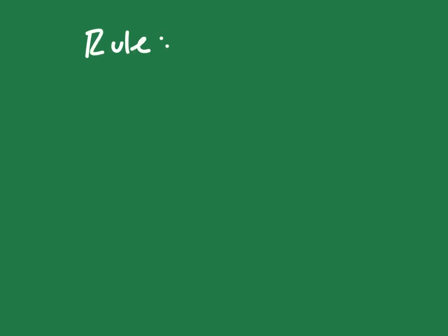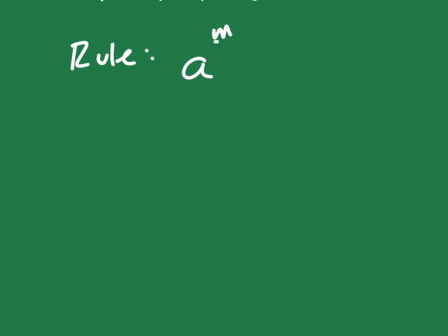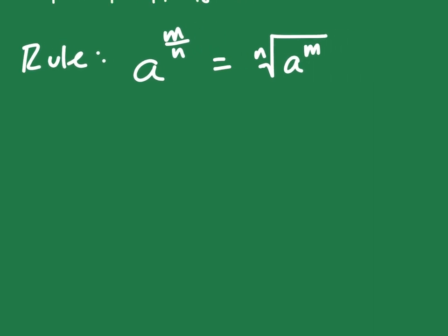So let's talk about a rule. The rule is: if you have some number a raised to the m over n power — you're raising it to a fraction — then you take the nth root of a to the m power, or you can write this as the nth root of a, that whole quantity raised to the m power. This second form is probably the one I use the most.